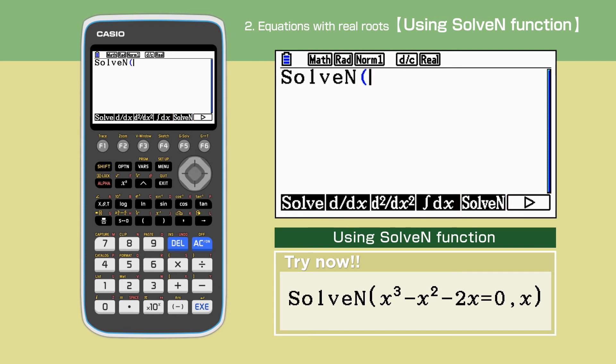Enter information in solve n. We need to make sure we enter the information in the following order: Solve n, bracket, equation, comma, variable you want to find, bracket close. In this example, our entry to solve n will look like solve n, bracket, x cubed minus x squared minus 2x equals 0, comma, x, bracket close.